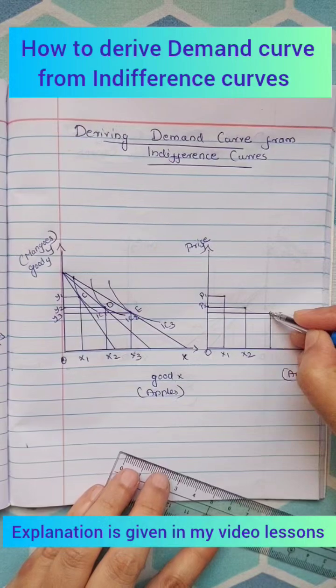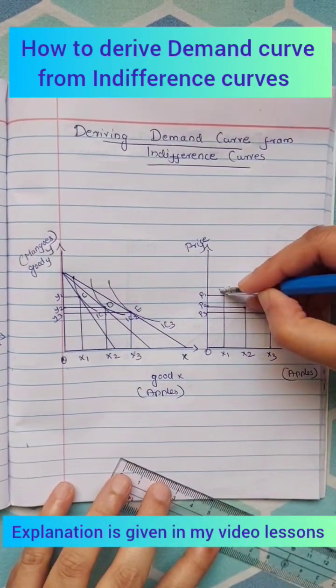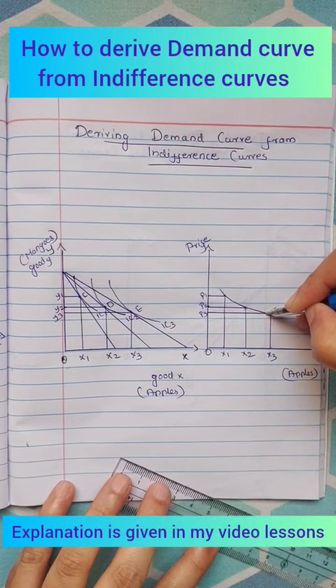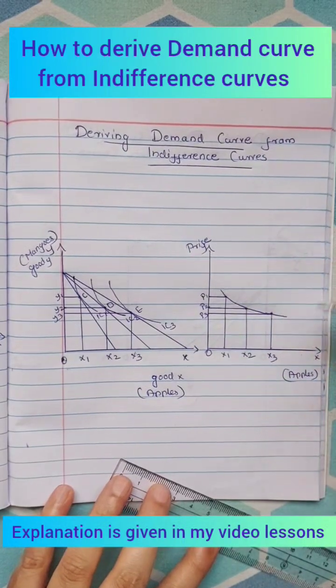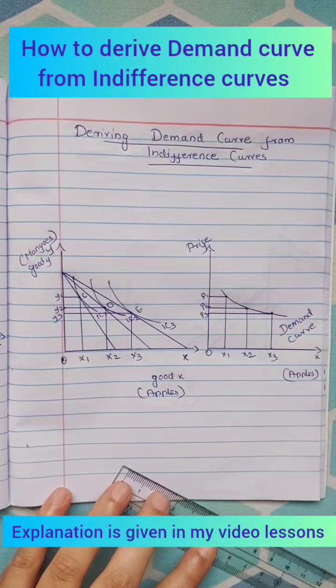Join all these points and we will get a downward sloping demand curve. The negative slope of the demand curve is due to substitution effect and income effect.